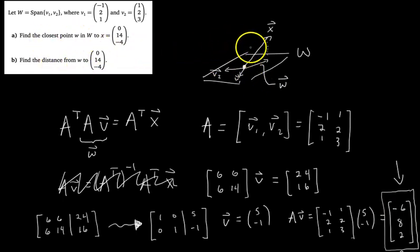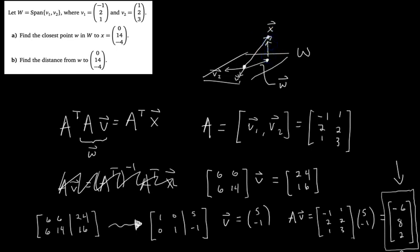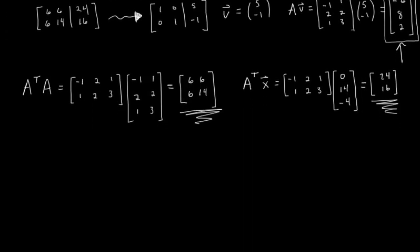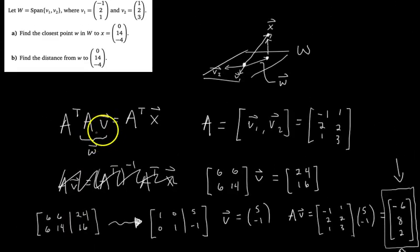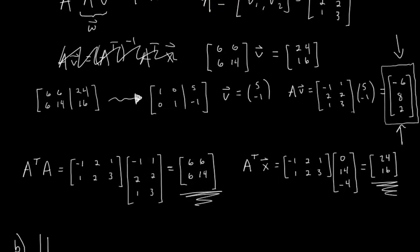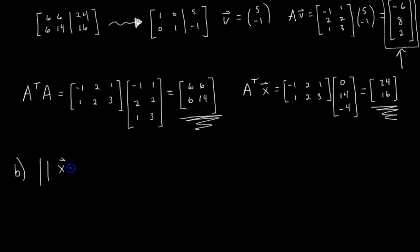For Part B, we want to find the distance from the tip of vector w to the tip of vector X — the length of that dotted line. The answer will be a scalar, not a vector. First we find the vector X minus vector w, then take its magnitude. This difference vector is technically in W perp. So the answer is going to be the magnitude of vector X minus vector w.